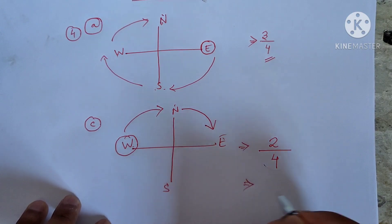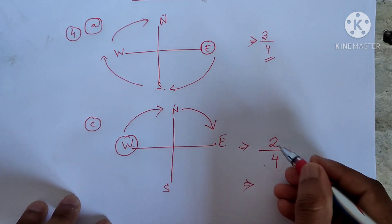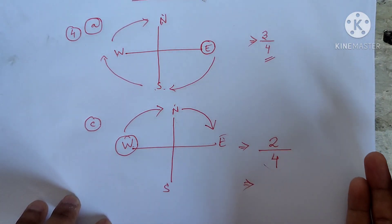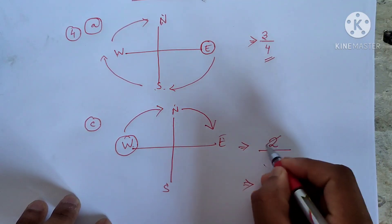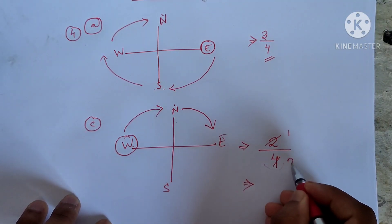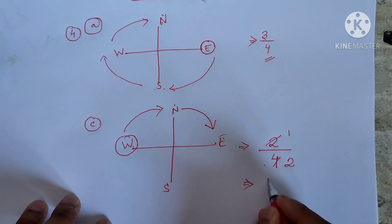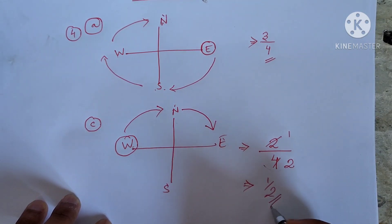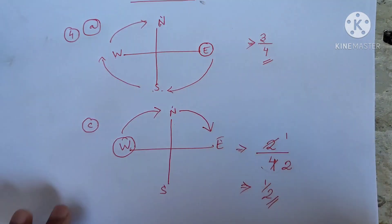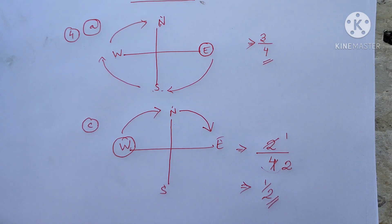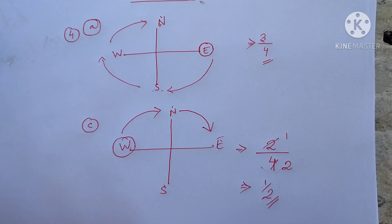Out of four total directions, we are turning two times, so the answer is two by four. Can we simplify? Yes — two divided by two is one, four divided by two is two, so one by two is the reduced answer. Two by four is also correct, but one by two is the simplified form. Now let's go to number five.